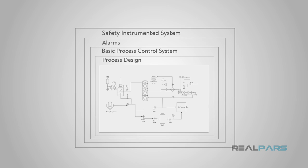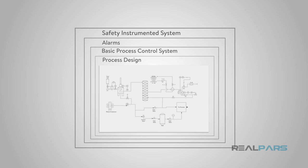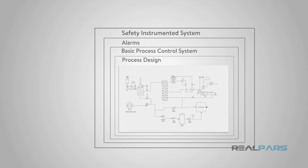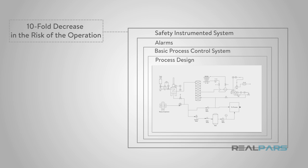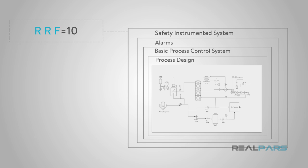The safety instrumented system, or SIS, represents an additional layer of protection above the first three layers discussed previously. This layer should provide at least a ten-fold decrease in the risk of the operation, which can be called a risk reduction factor of equal to or greater than ten.